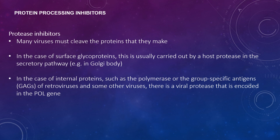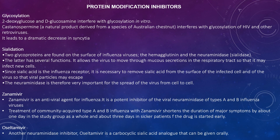Because many viruses must cleave the proteins they make — in the case of surface glycoproteins, this is usually carried out by a host protease in the secretory pathway — and in the case of internal proteins such as the polymerase and group-specific antigens of retroviruses and other viruses, there is a viral protease encoded in the pol gene. Protein modification inhibitors target processes such as glycosylation and acylation. Regarding glycosylation: 2-deoxy-D-glucose and D-glucosamine interfere with glycosylation in vitro. Castanospermine interferes with glycosylation of HIV and other retroviruses and leads to a dramatic decrease in viral synthesis.